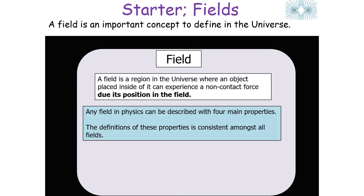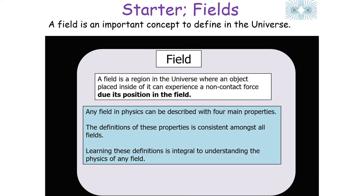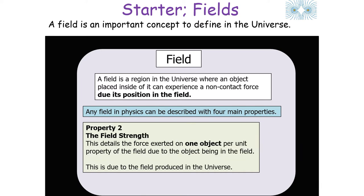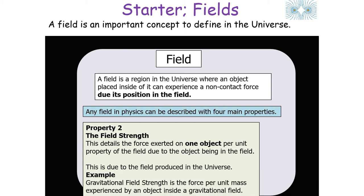Any field in physics can be described with four main properties and the definitions of these properties are consistent amongst all fields. The first property is the force law, which details the force exerted between two objects inside the field, usually named after the famous scientist who worked in that area. The second property is field strength, which details the force exerted on one object per unit property of the field.